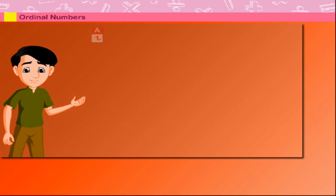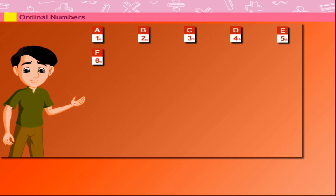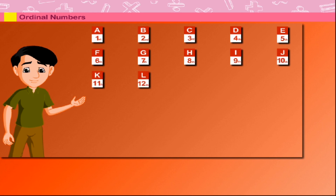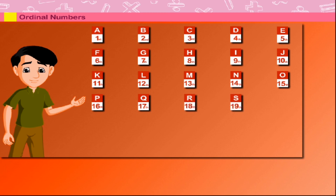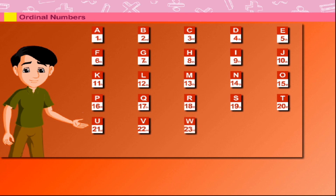Ordinal numbers. A is the first alphabet. B is second. C is third. D is fourth. E is fifth. F is sixth. G is seventh. H is eighth. I is ninth. J is tenth. K is eleventh. L is twelfth. M is thirteenth. N is fourteenth. O is fifteenth. P is sixteenth. Q is seventeenth. R is eighteenth. S is nineteenth. T is twentieth. U is twenty-first. V is twenty-second. W is twenty-third. X is twenty-fourth. Y is twenty-fifth. And Z is the twenty-sixth alphabet.